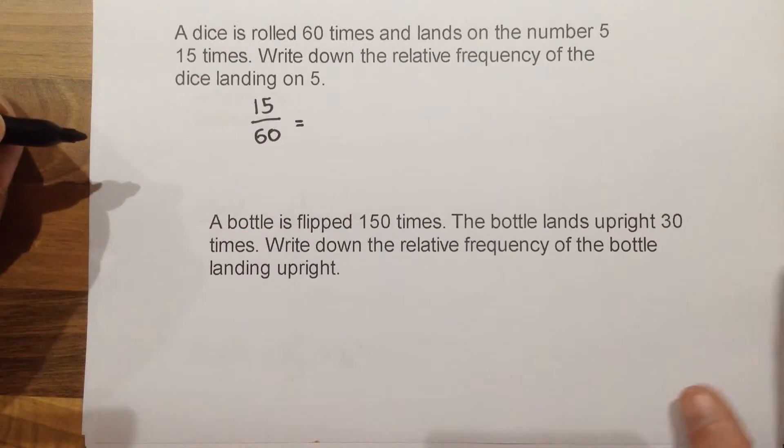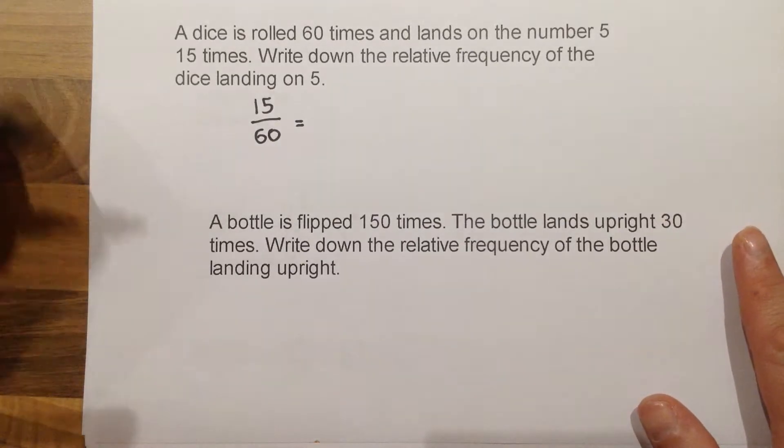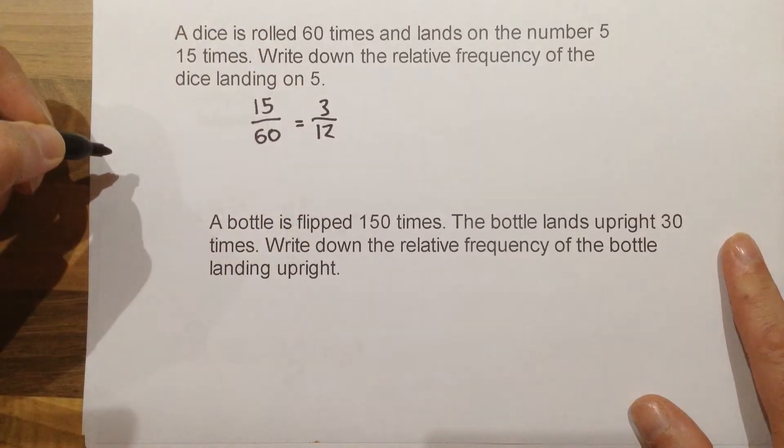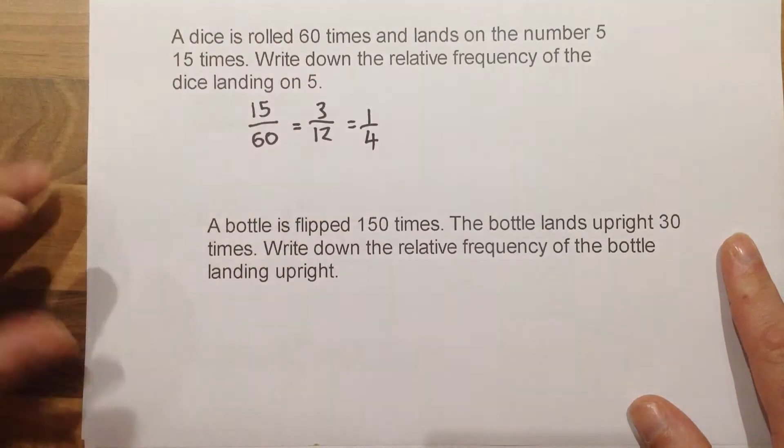You may want to, at this point, try and simplify that fraction. So dividing top and bottom by 5 will give us 3 over 12. Then that would simplify down to a quarter.